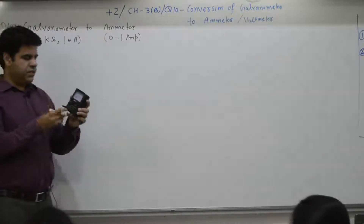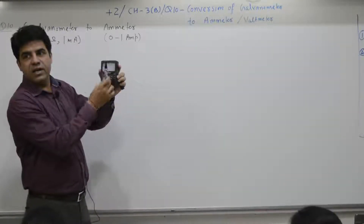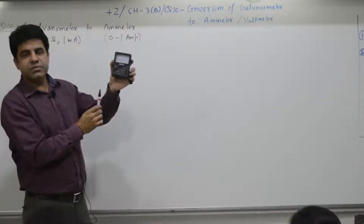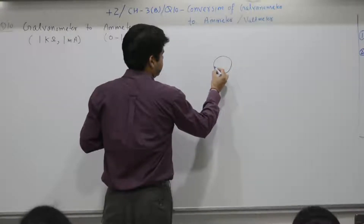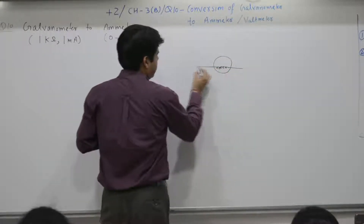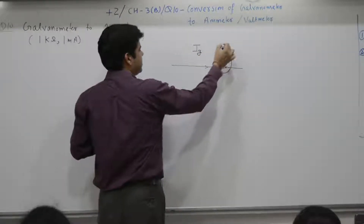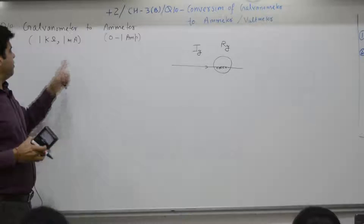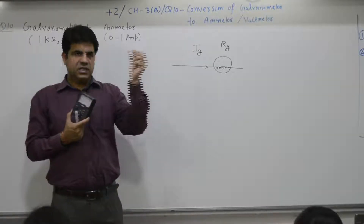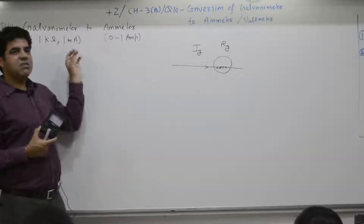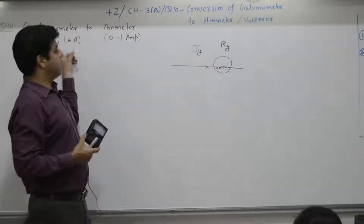We purchase a galvanometer from the market. It has a moving coil — this coil is made up of a wire and it can carry how much current? I_g. Resistance is R_g. It can carry only 1 milli ampere. You can measure current with a galvanometer, but that value is only 1 milli ampere — very small — and this resistance is 1 kilo ohm.